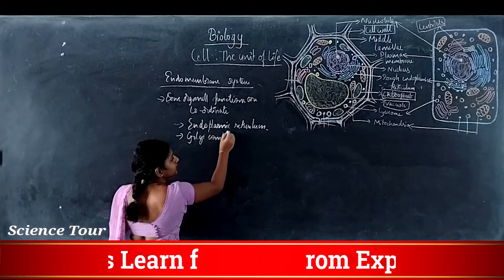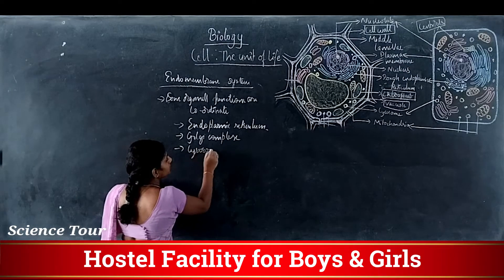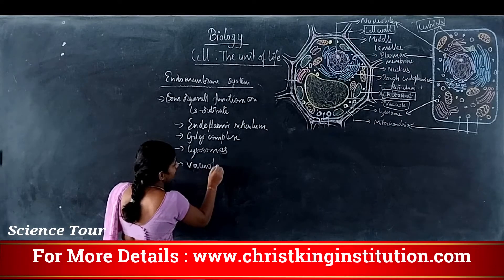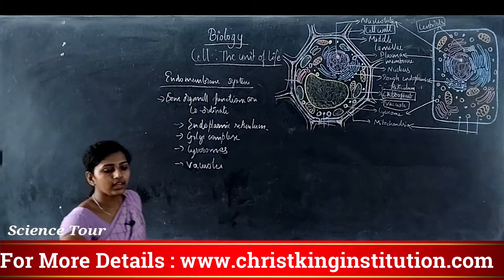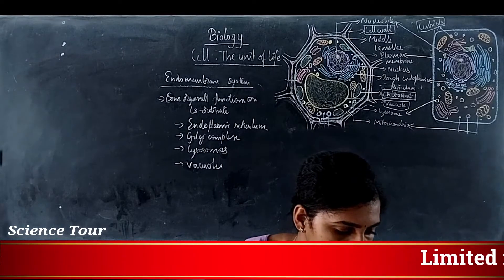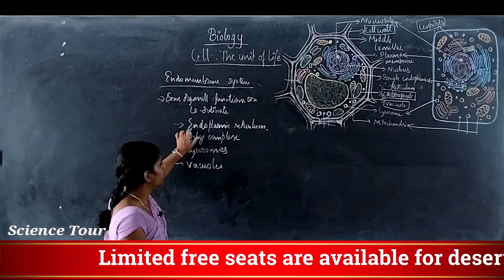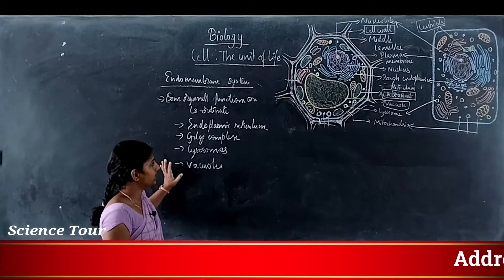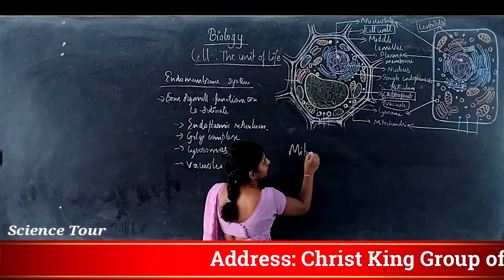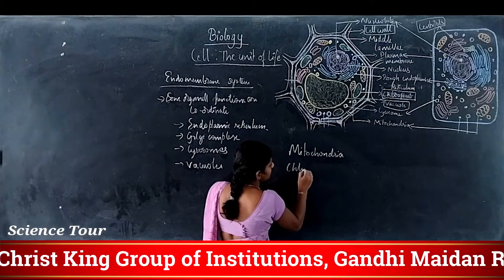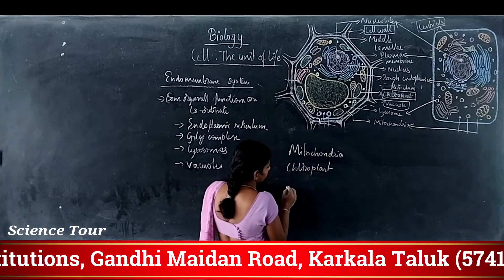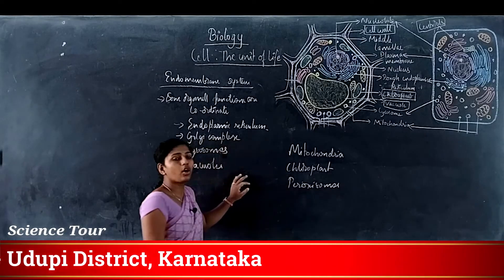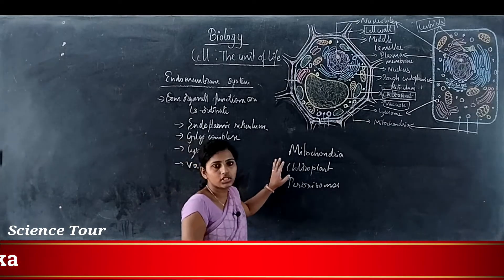The endomembrane system includes endoplasmic reticulum, Golgi complex, lysosomes, and vacuoles — all their functions are coordinated and dependent on one another. Except these, mitochondria, chloroplasts, and peroxisomes are not included in the endomembrane system because their functions are independent.